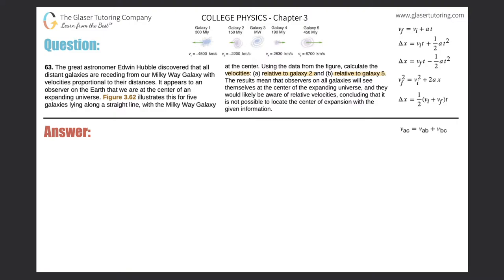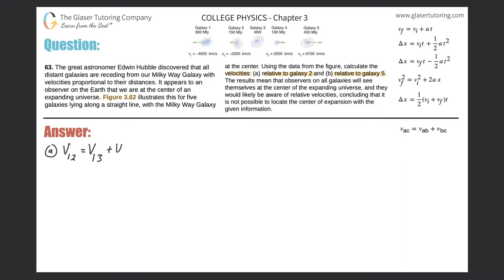We can kind of already guess that if I'm trying to figure out the relative velocity of galaxy 1 relative to galaxy 2, I would just subtract these two values. That would be correct, but let's get the intuition with the math. So for part A, the velocity of galaxy 1 relative to galaxy 2 equals the velocity of galaxy 1 relative to galaxy 3 — I chose that because I know all the numbers relative to galaxy 3 — plus the velocity of galaxy 3 relative to 2.